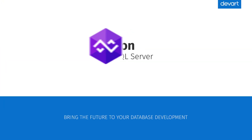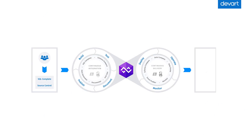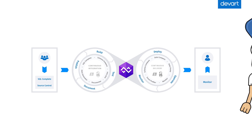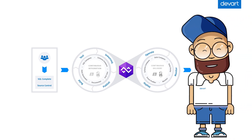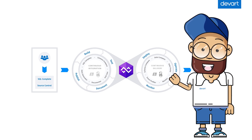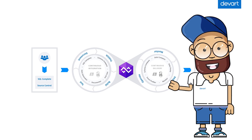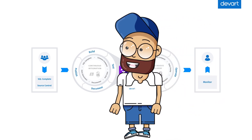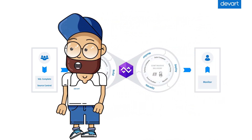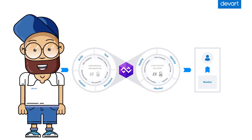We are glad to present dbForge DevOps Automation for SQL Server, which can be integrated with PowerShell and Jenkins and allows setup of the DevOps process. With the help of our solution you can set up your company's DevOps process all the way from development to production server deployment with the ability to monitor server performance. The whole process is wrapped in a single logical chain which includes all products from dbForge's mainline, each one being a crucial link in this chain.